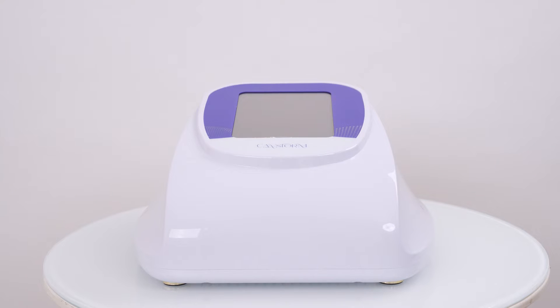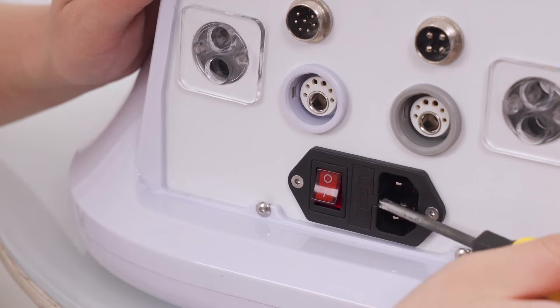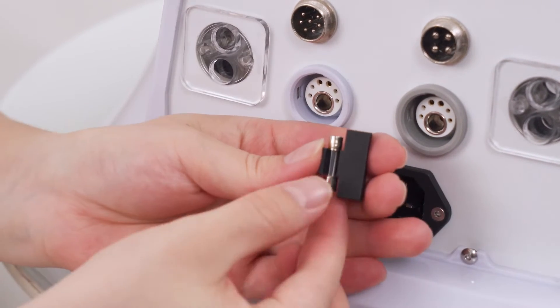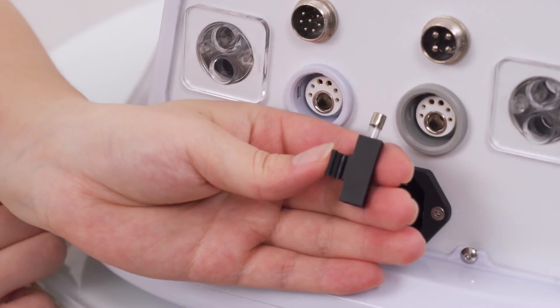Take out the machine and its accessories. There are two spare fuses which can replace the broken one in the machine. When the fuse breaks, use a screwdriver to remove it and replace it with a spare one.